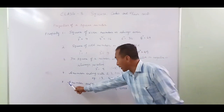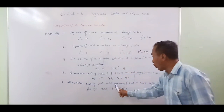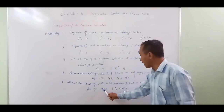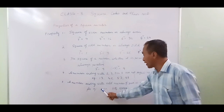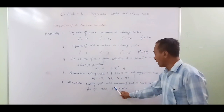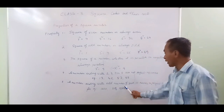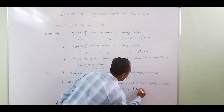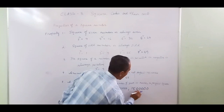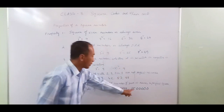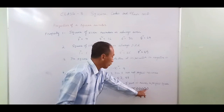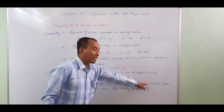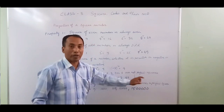Property 5: a number ending with an odd number of zeros is never a perfect square. For example, a number with 1 zero, or 3 zeros, or 5 zeros — any odd count of trailing zeros — can never be a perfect square. Only an even number of trailing zeros is possible for a perfect square.